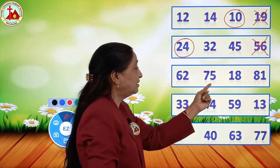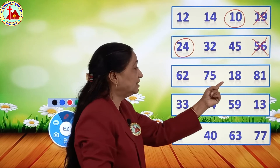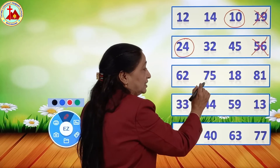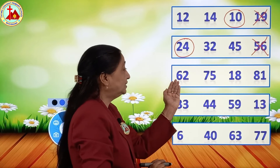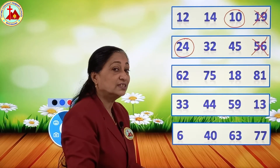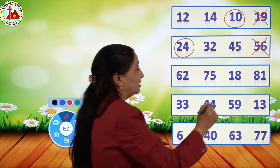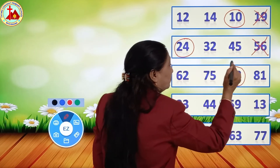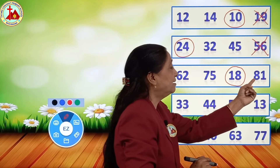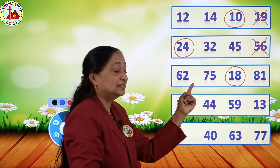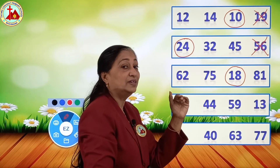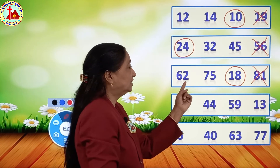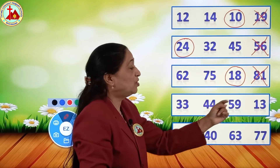Now the next one: 62, 75, 18 and 81. Here also the first digits are different, so we see the first digit: 6, 7, 1 and 8. Which number will come first? Number 1. So with 1, which number is there? 18. So 18 is the smaller number among all these - we put a circle. Now among 6, 7 and 8, which comes after? 8 comes after 7. So the number which comes after is the bigger number - 81 is the bigger number and we put a cross. So 18 is the smaller number and 81 is the bigger number.